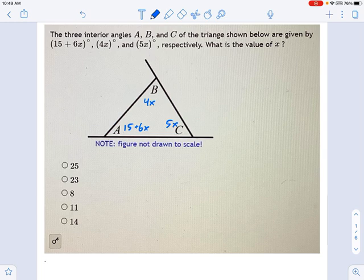Well, the way you do that is you say, okay, I know the angles of a triangle must add up to 180, so let's just add up these ugly angles, 15 plus 6x plus 4x plus 5x.